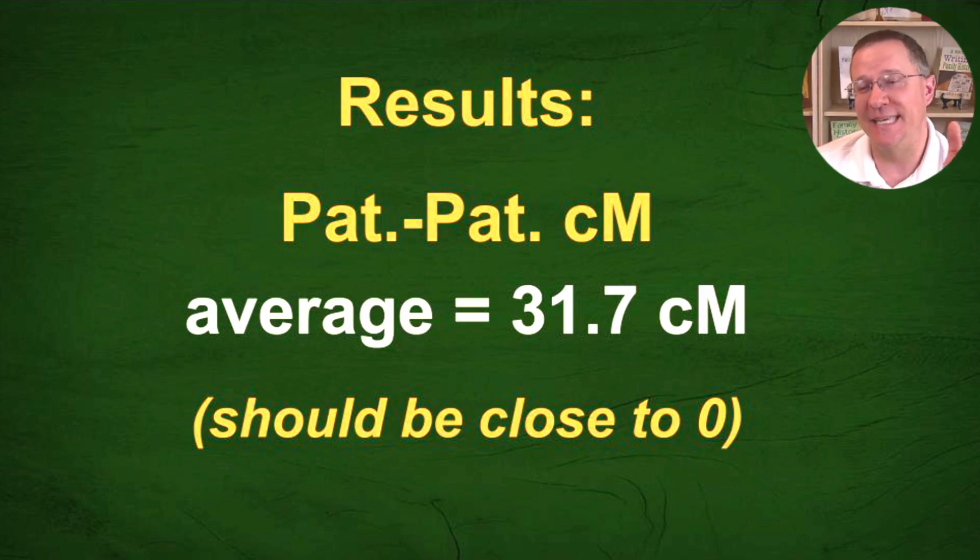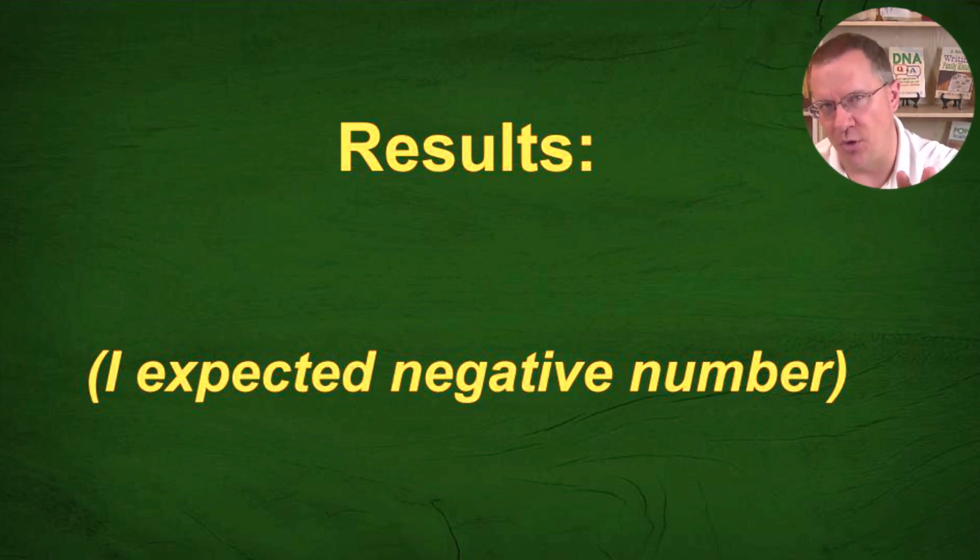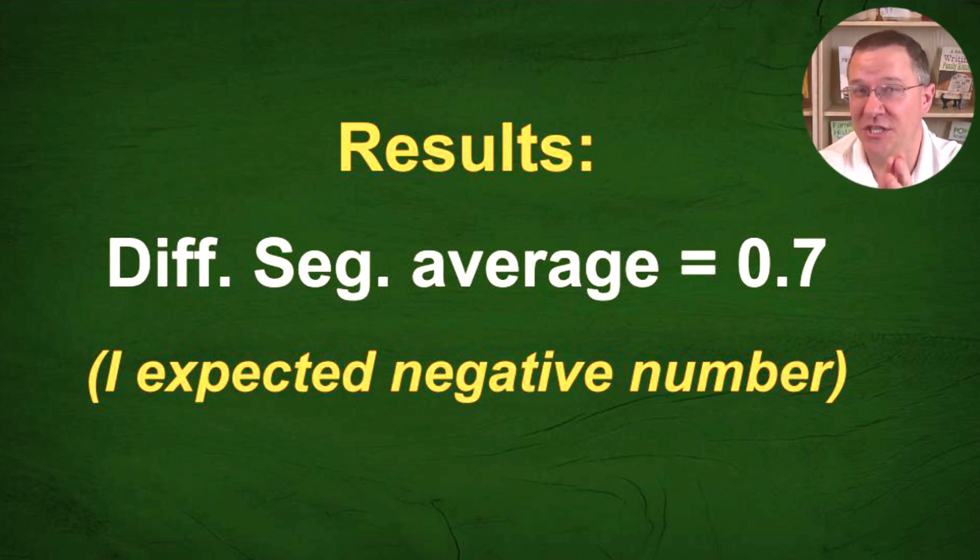So I went on to the next one, and that is the difference in segments. Now, again, my cousin should have more segments. And since I'm extracting his from mine, I should have a negative number as far as the number of segments we share with each one of these matches. It turns out, no, I ended up actually with a positive number, 0.7. So in other words, I almost, on average, had one more segment than him for each one of these matches.